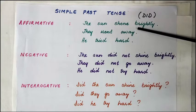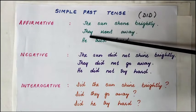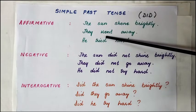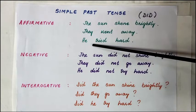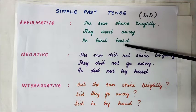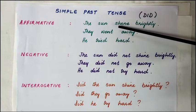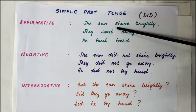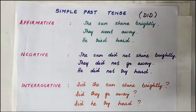Can you see the difference? Past continuous tense: 'The sun was shining brightly.' 'They were going away.' 'He was trying hard.' But those original sentences are in the simple past tense. So when you have two past tenses in one sentence — one in the past continuous and one in the simple past — you have to know how to use the two of them together.